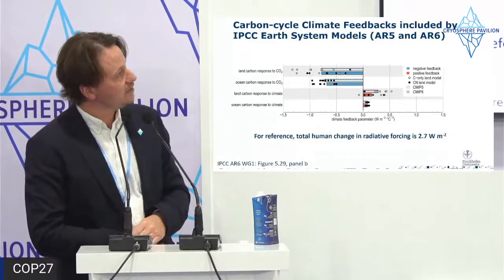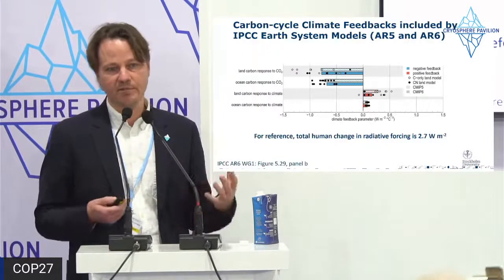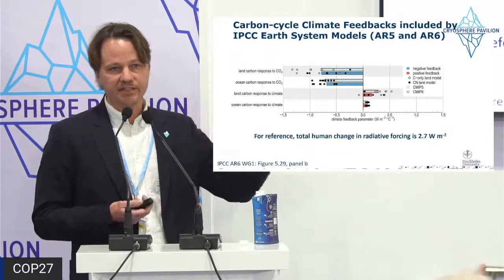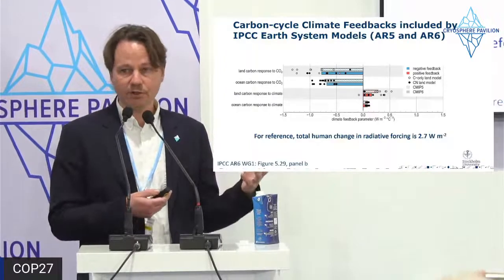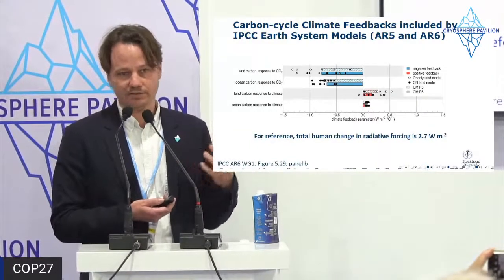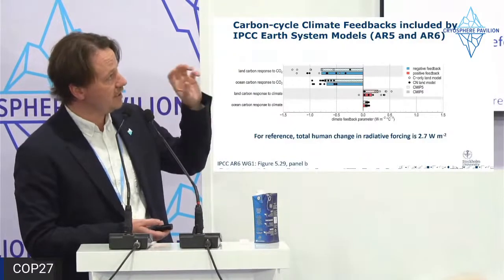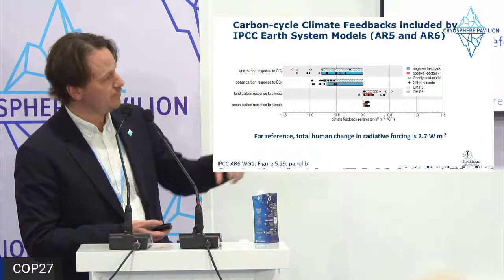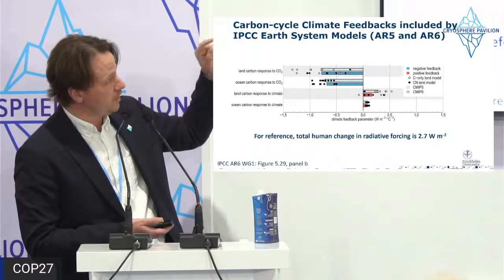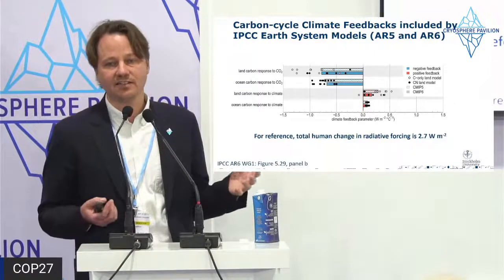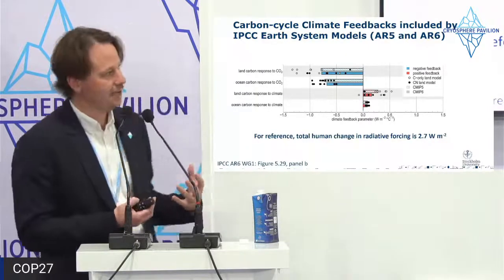A positive or negative feedback is a self-reinforcing mechanism in the climate system — emissions trigger processes that make climate either cooler or warmer. This IPCC graph shows feedbacks included in the models: cooling feedbacks on the left, warming feedbacks on the right. The two big blue bars are the land carbon response and ocean carbon response to CO2 — essentially how the Earth system is buffering emissions by taking a lot of CO2 up.